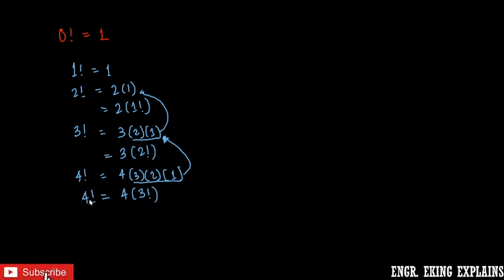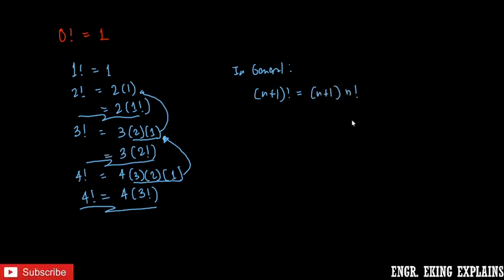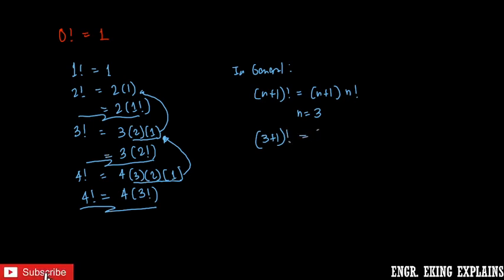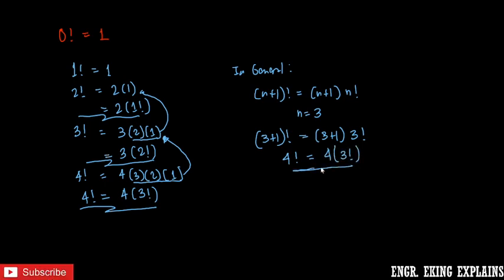So what does this relationship mean, applicable to all these examples? We can see in general that if we have the factorial of n plus 1, that is just equal to (n+1) times n factorial. For example, if our n is equal to 3, we can verify: 3 plus 1 factorial is equal to 3 plus 1 times 3 factorial, which gives us 4 factorial equals 4 times 3 factorial — which is the same as what we found.